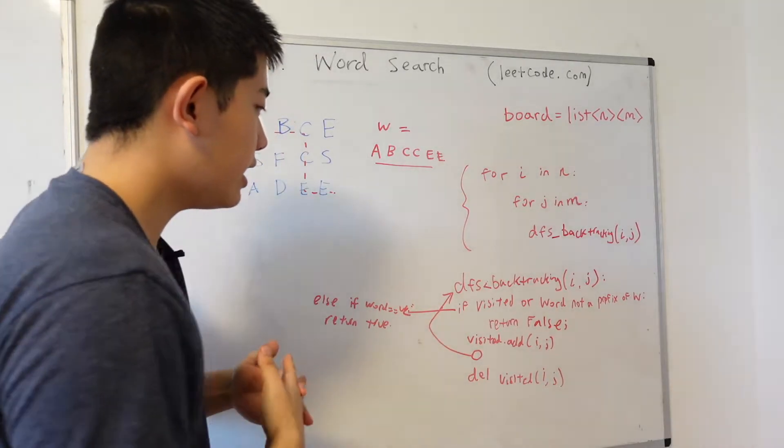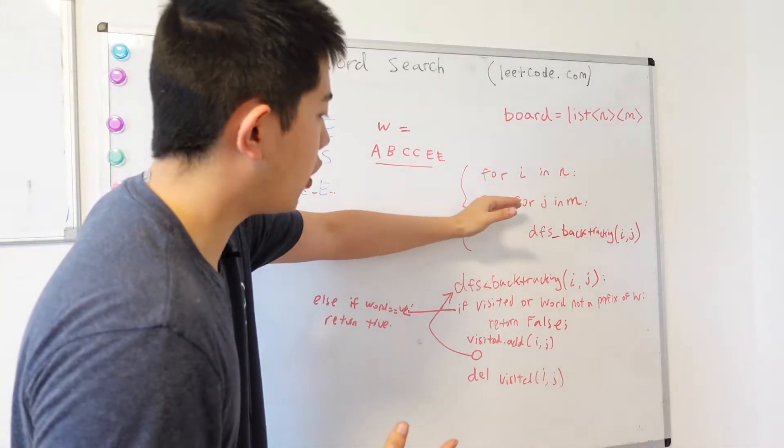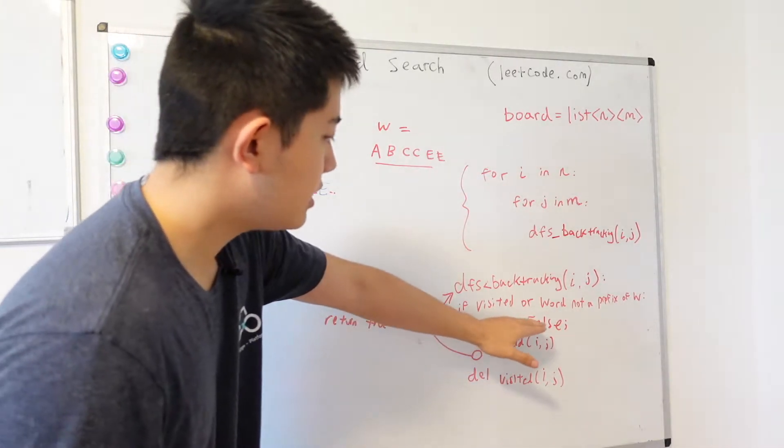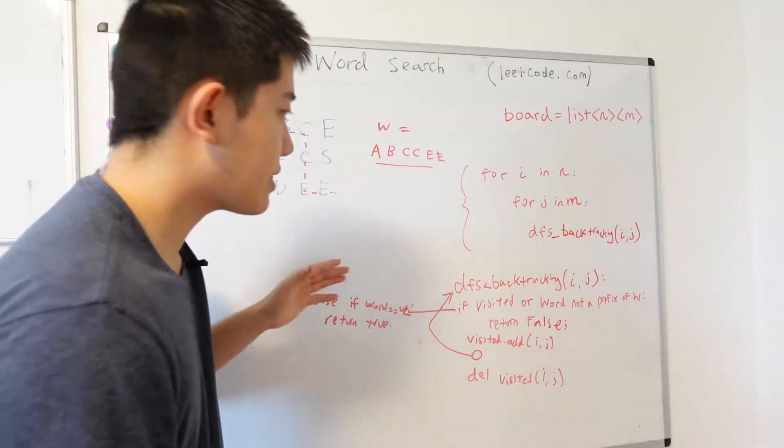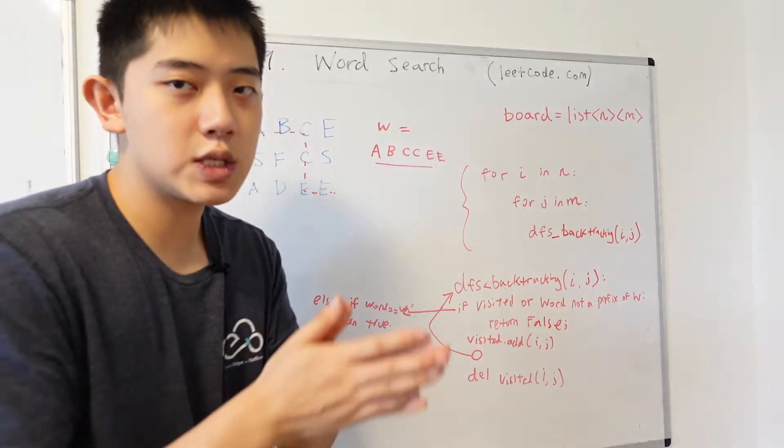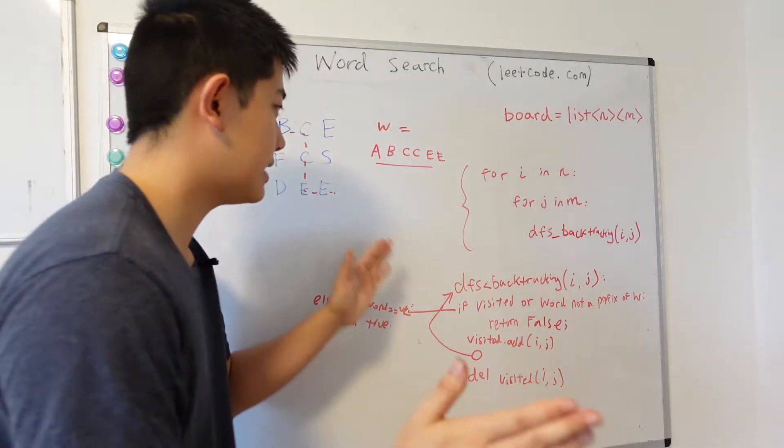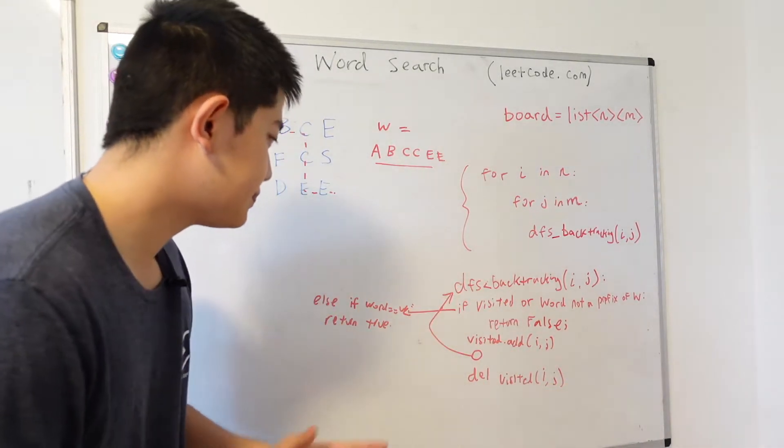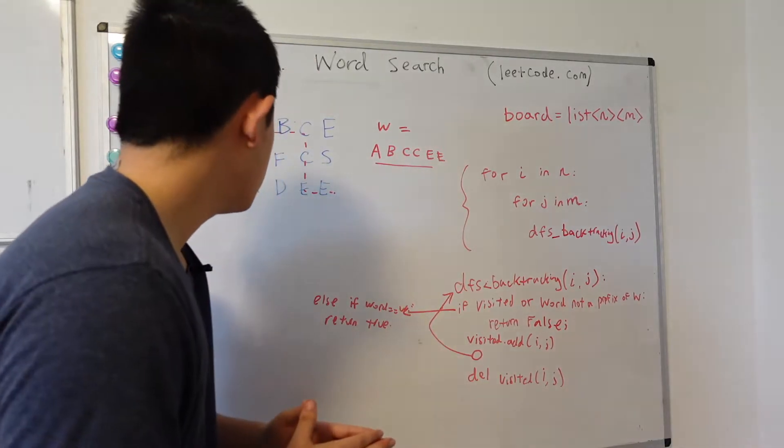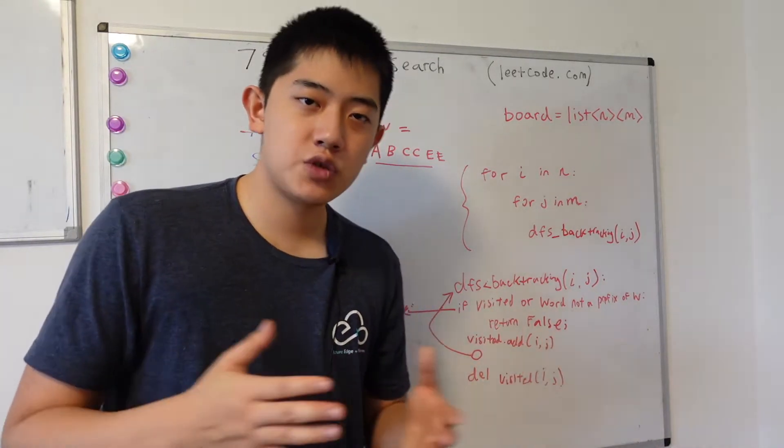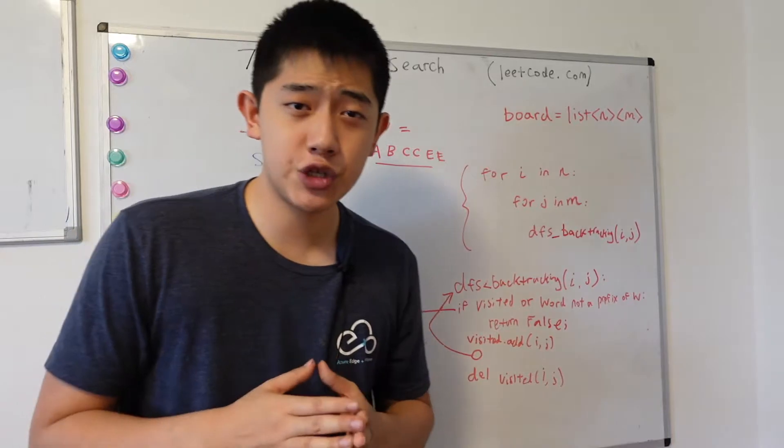And if we run DFS on every single node and we can't find a path that equals the word, then that's when we return false. And that's the end of that depth first search. So the algorithm isn't too difficult to understand. It's mainly the implementation that's kind of difficult.